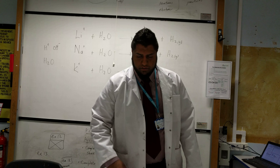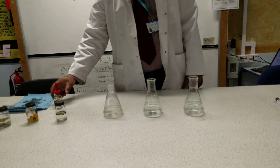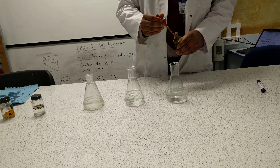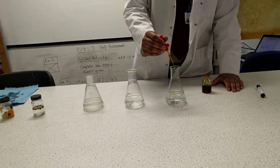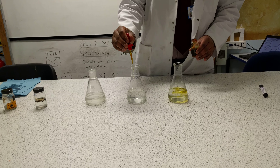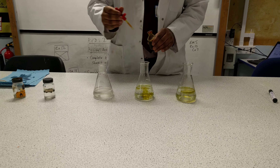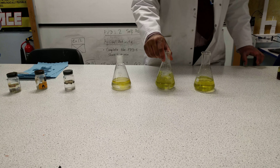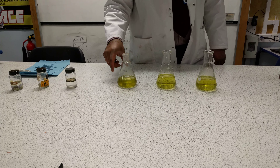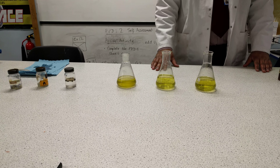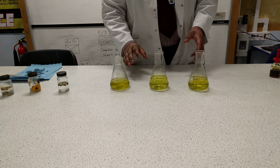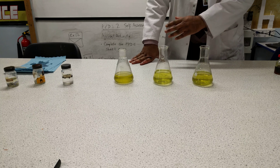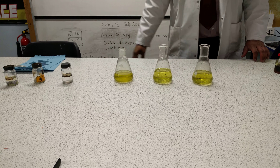I've taken some conical flasks and I'm going to add some water to each of them. To check the pH and find out whether it's acidic or alkali, we put in a universal indicator. We can clearly see that the water turns green in color, which indicates a neutral pH. There may be a slight tinge of yellow because water is not absolutely neutral — it depends on how the water is treated — but at the moment it's greenish, so we take it as neutral.